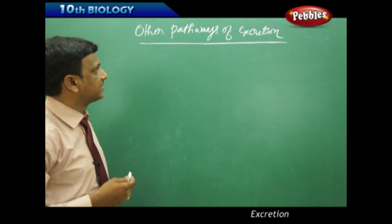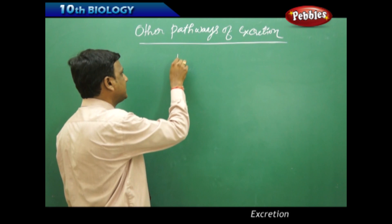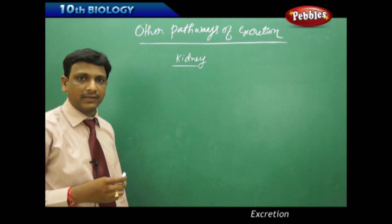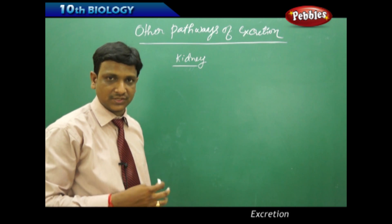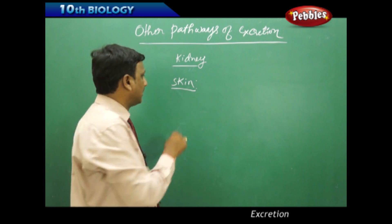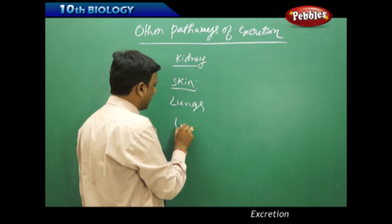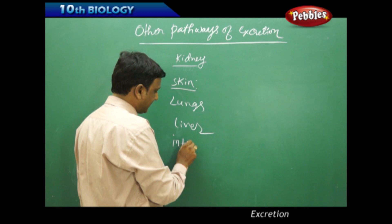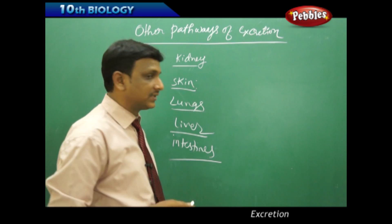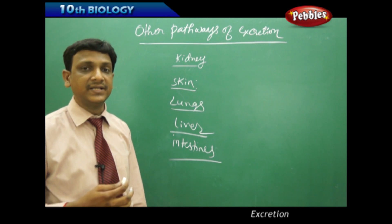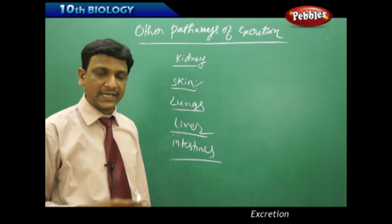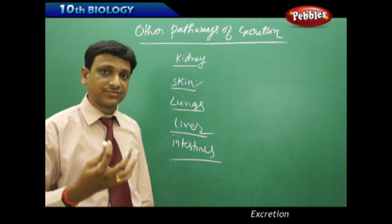Apart from kidneys, we have other organs that also help in excretion: the skin, lungs, liver, and intestines. The kidneys are the major organs for excretion of urea, uric acid, nitrogenous and toxic waste, and extra water and mineral salts. These other organs also help in sending toxic materials out of our body.